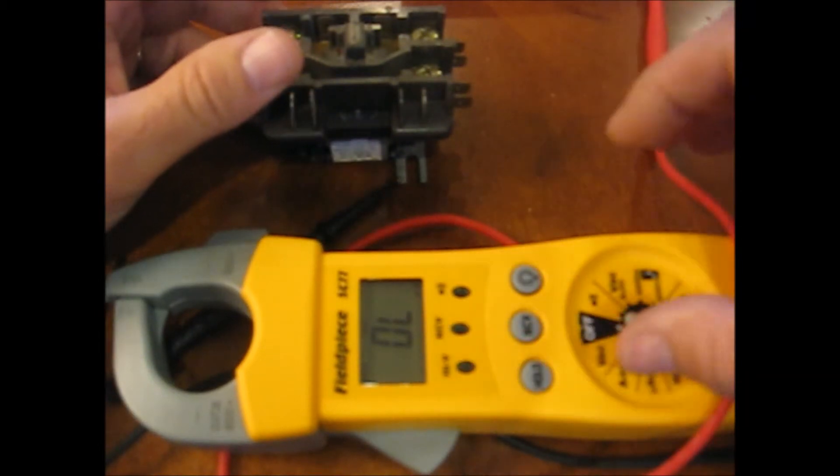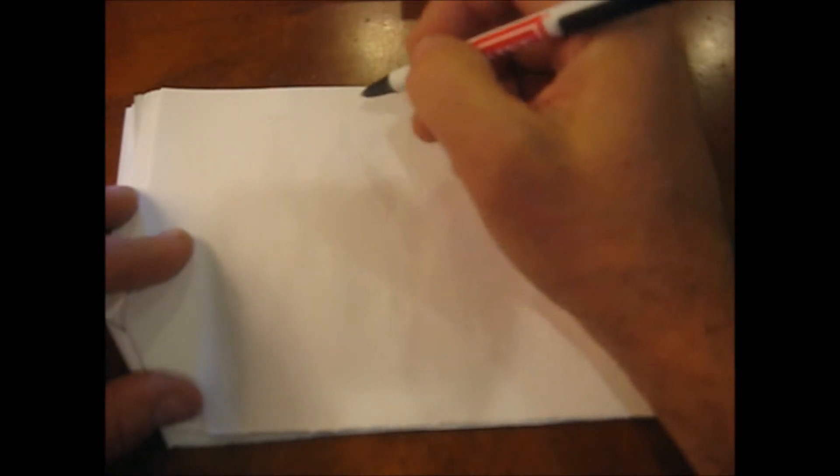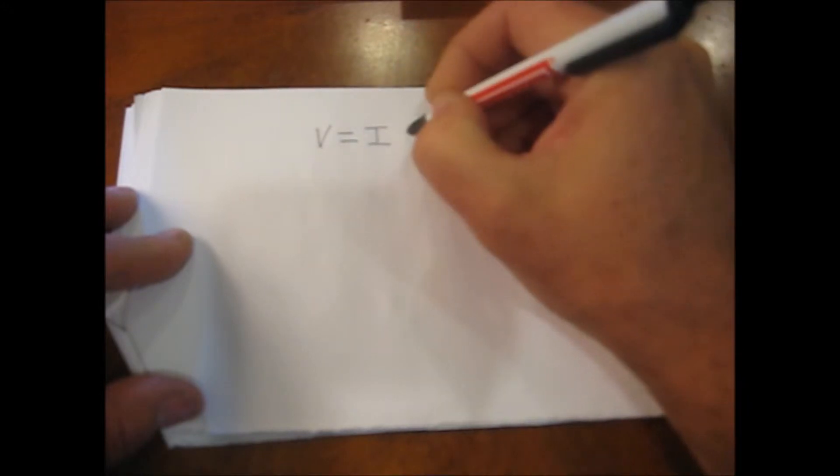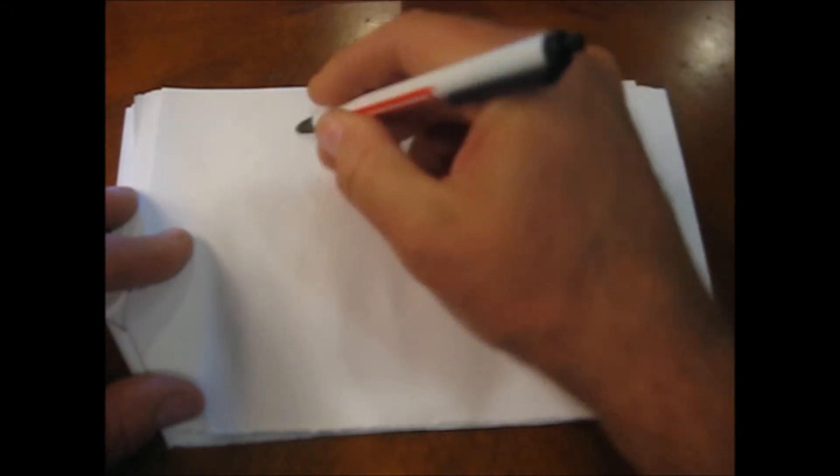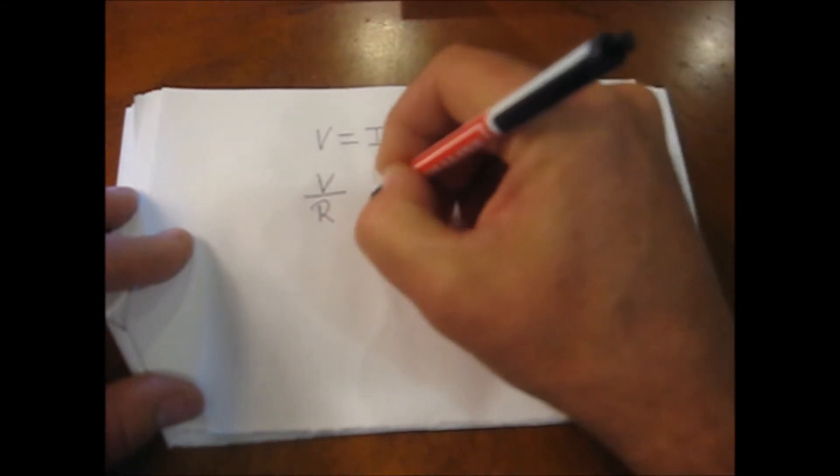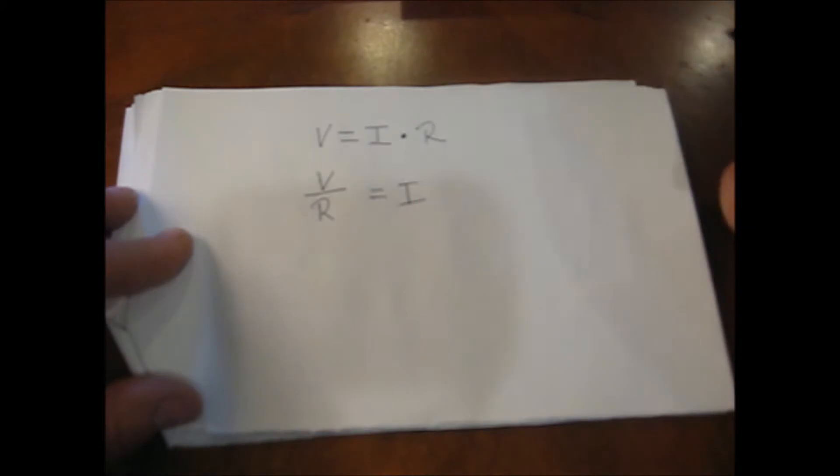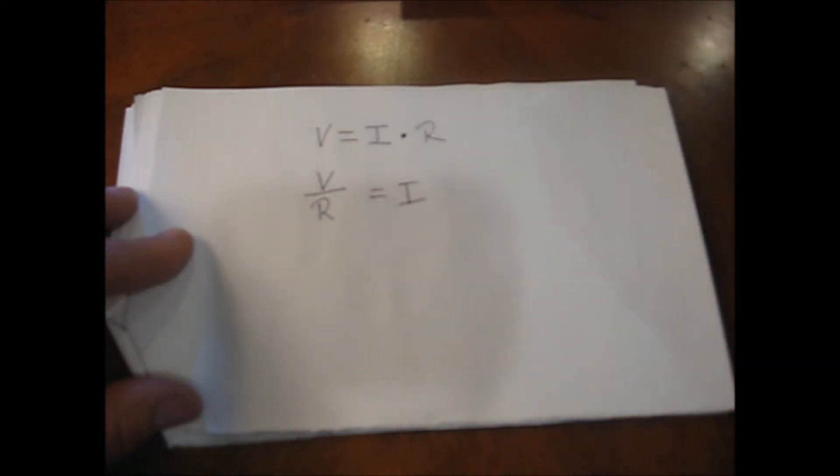And I'll show you that in the equation. Okay. So the basic electrical equation is volts equals current times resistance. Or we'll divide through by resistance and we get volts divided by resistance equals current.